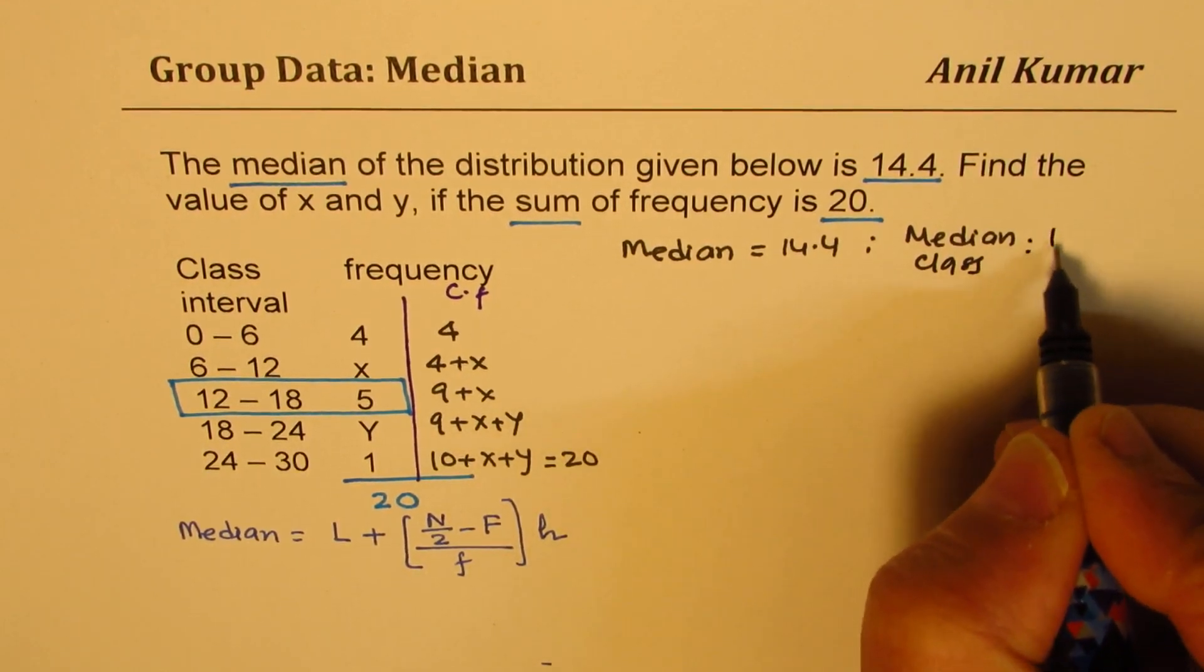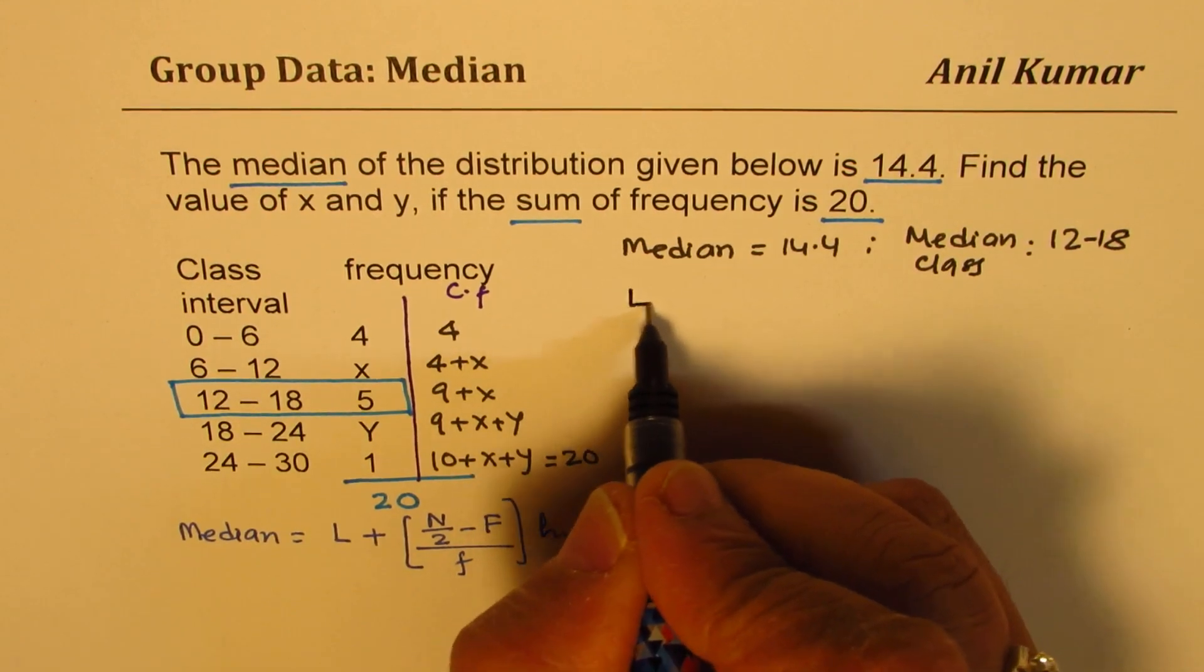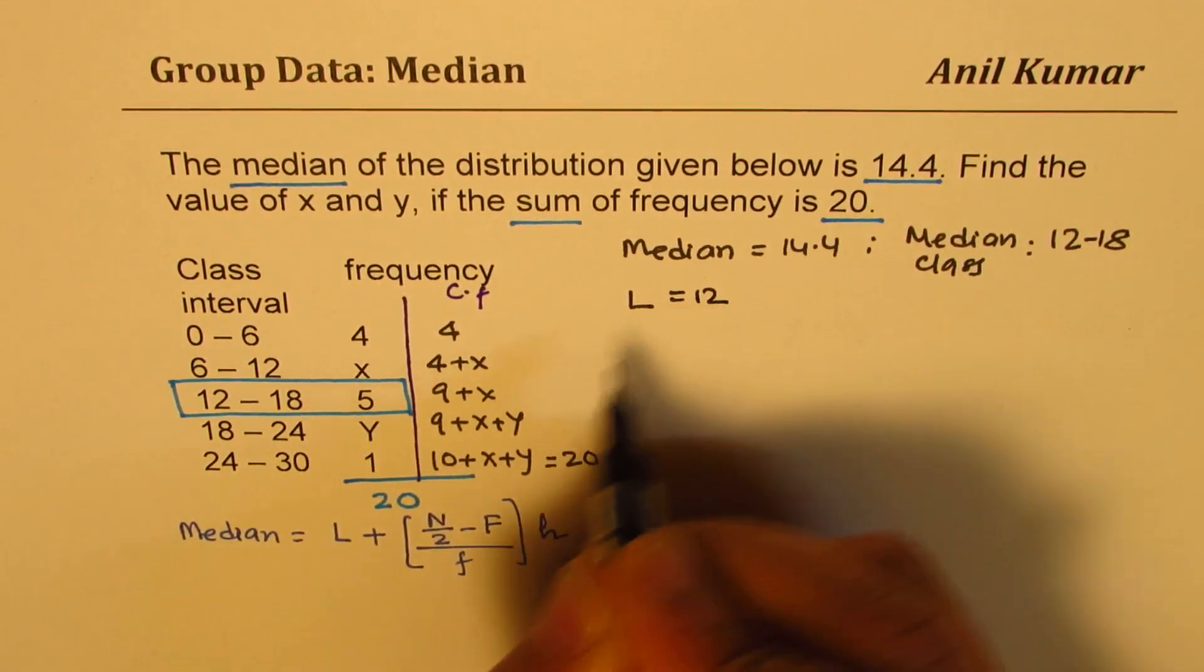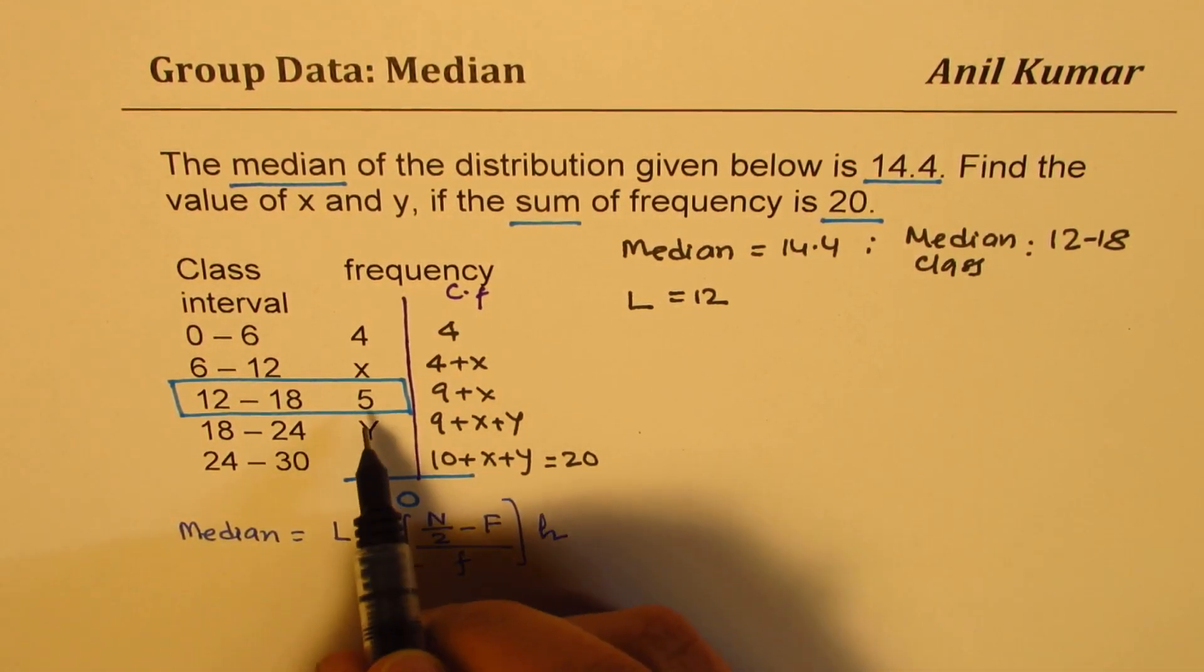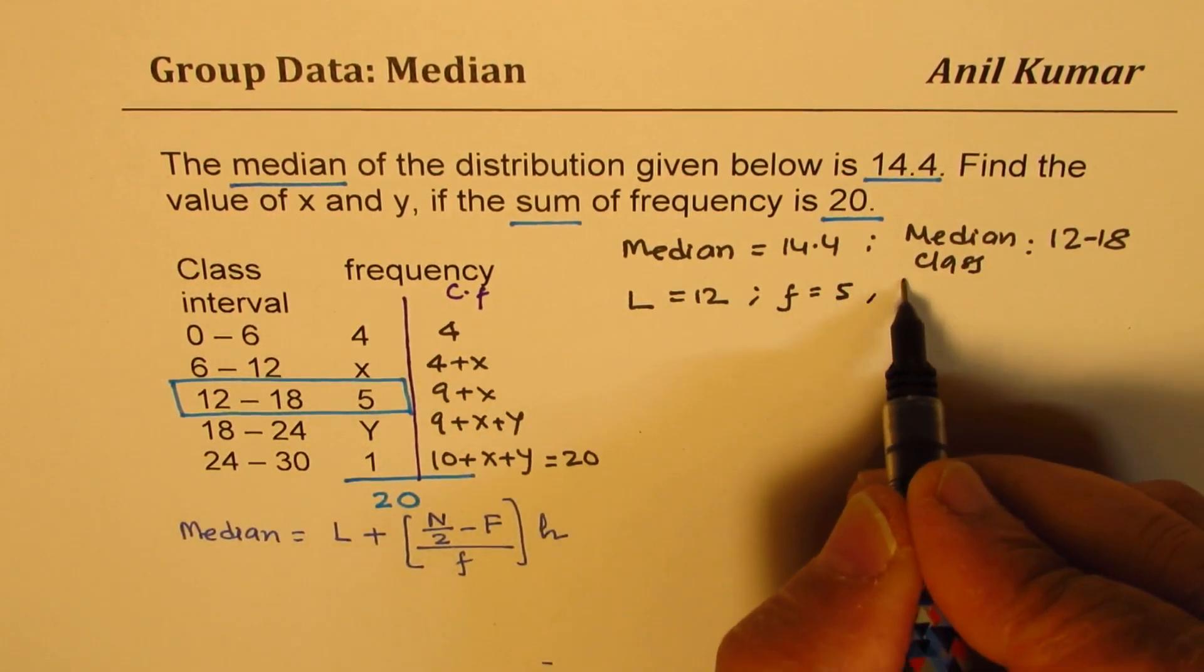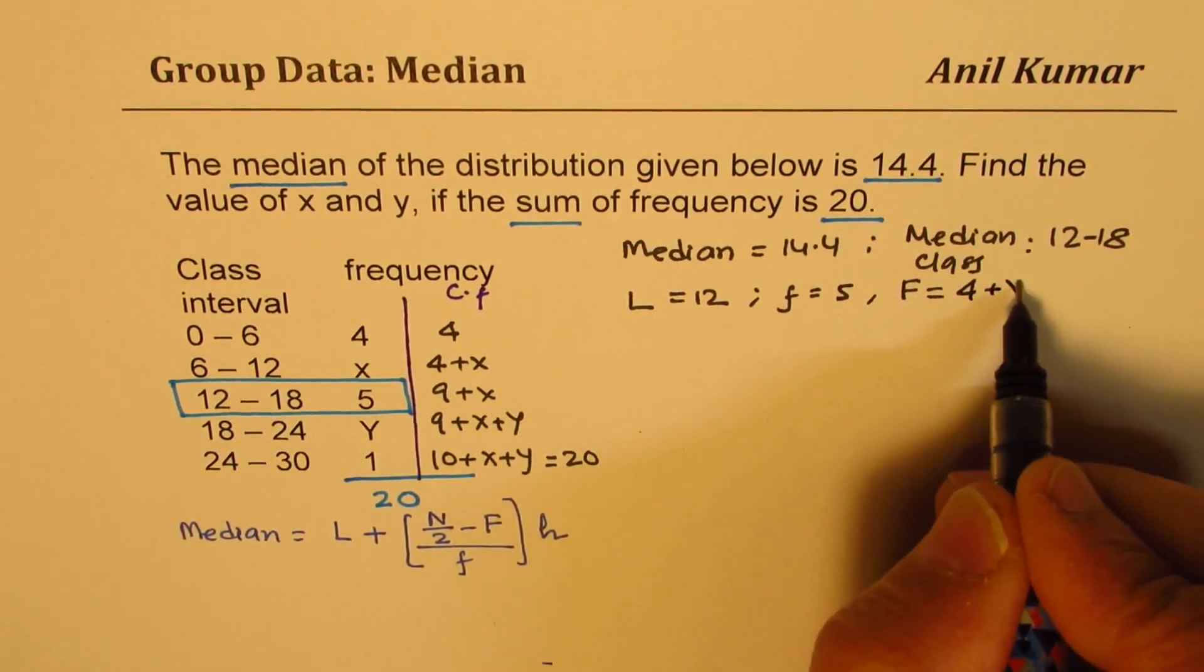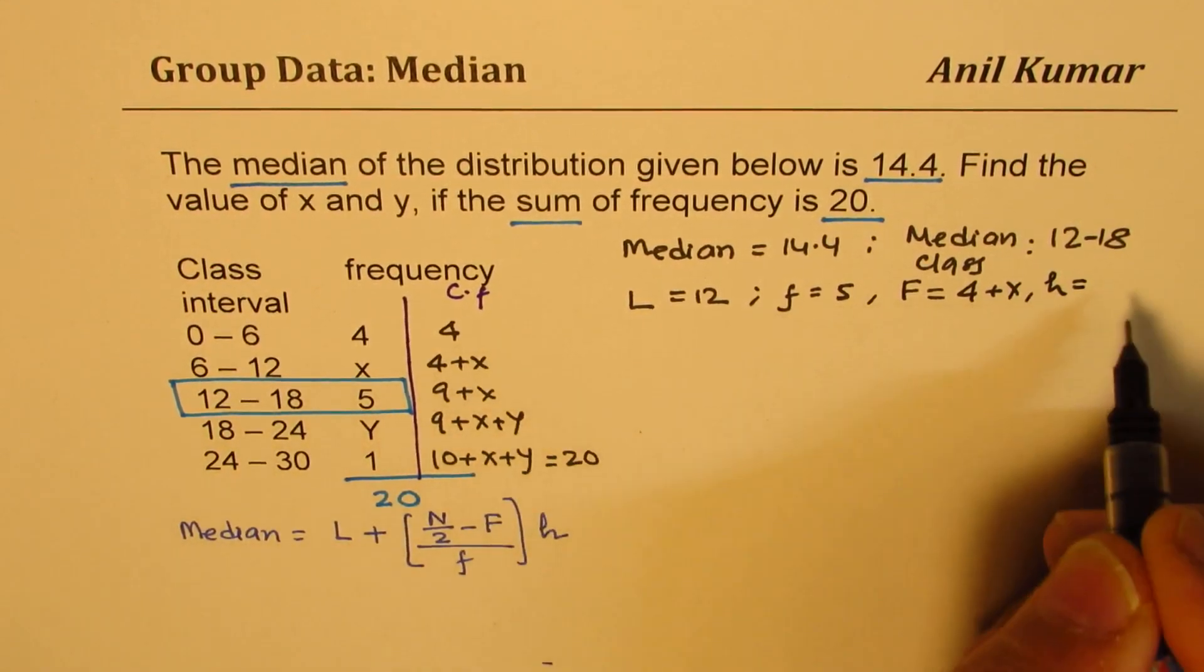So here the lower limit L is equal to 12, the frequency f is equal to 5, the cumulative frequency here is 4 plus x, and the value of h is 6.